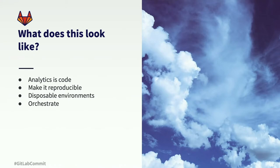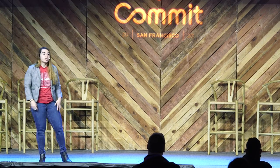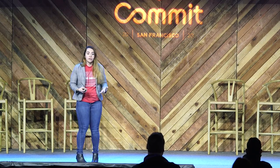So what does this look like in practice? First, analytics is code. Data teams use a variety of tools to access, integrate, model, and visualize data. Fundamentally, each of these tools generates code and configuration which describe the actions taken upon the data to deliver it. When you make your data analysis reproducible, you create an environment in which everything is versioned — from low-level hardware and software configs to the code and configuration specific to each tool in the toolchain. When you have your definition of revenue or new user stored in code, any time you want to change the definition, you create an MR.